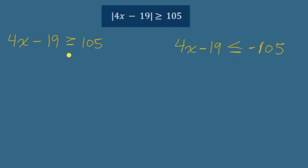So we're solving both of these. The solving process is no different from any other kind of equation. Add 19 to both sides: 4x is bigger than or equal to 124. Divide by 4 on both sides: x is bigger than or equal to 31.